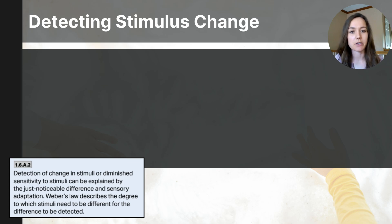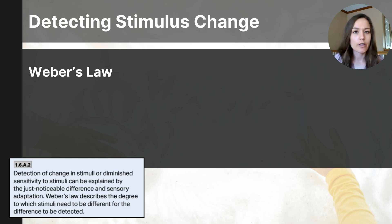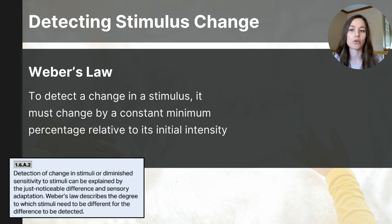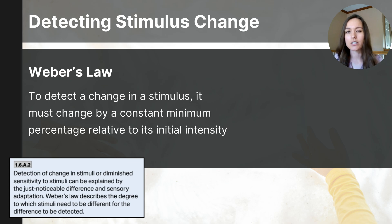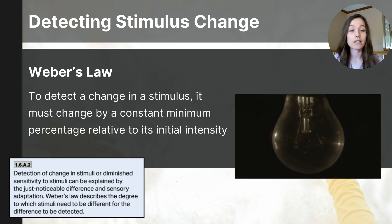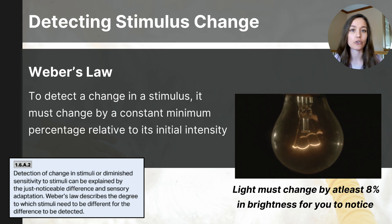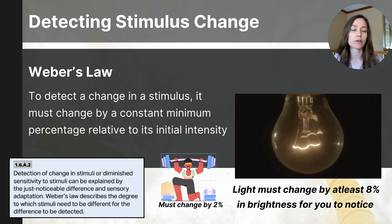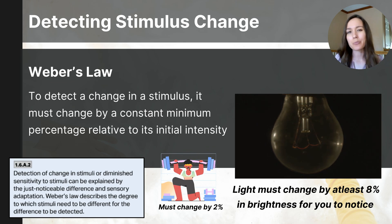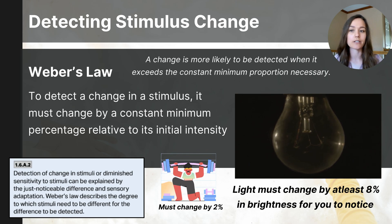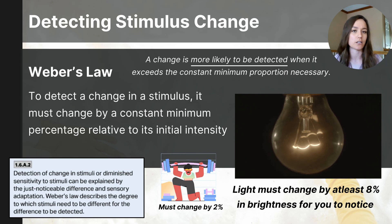As we learn about detecting when a stimulus has changed, it's important to know Weber's Law. Weber's Law was concluded by German physician Ernst Weber, who concluded that in order to detect a change in a stimulus, it must change by a constant minimum percentage relative to its initial intensity. If the change is less than that minimum percentage, we're likely not to notice it. The exact percentage varies depending on the stimulus — for light, the change must be at least 8% for you to notice it's gotten dimmer or brighter; for weight, the change must be at least 2% for you to perceive it's gotten heavier or lighter. Larger changes in a stimulus are more likely to be detected, as the required percentage is consistent relative to the initial intensity.